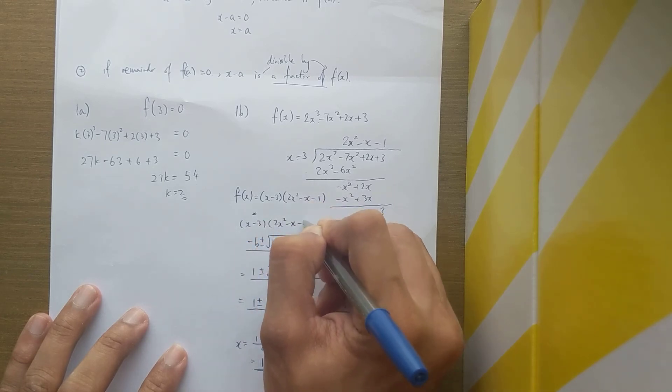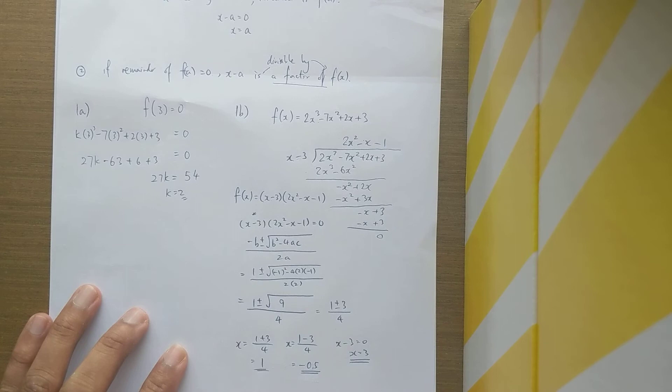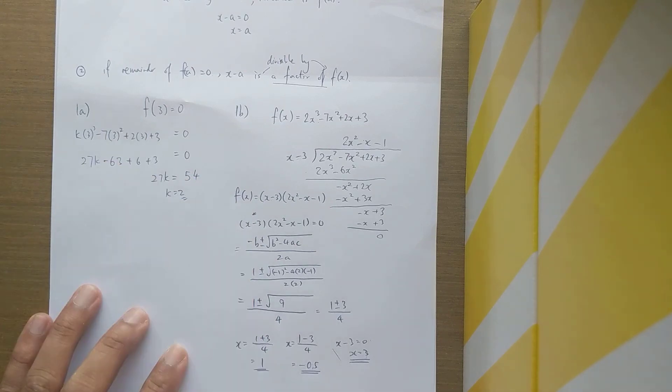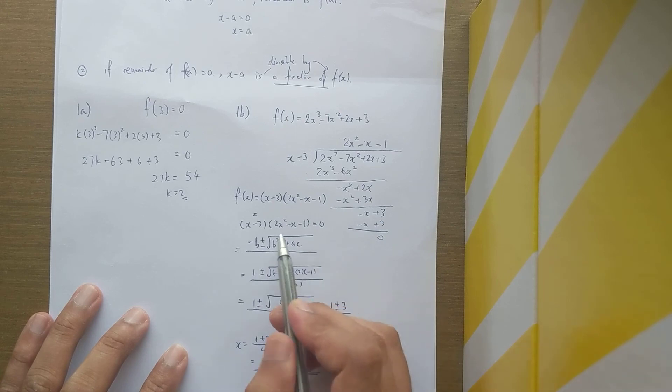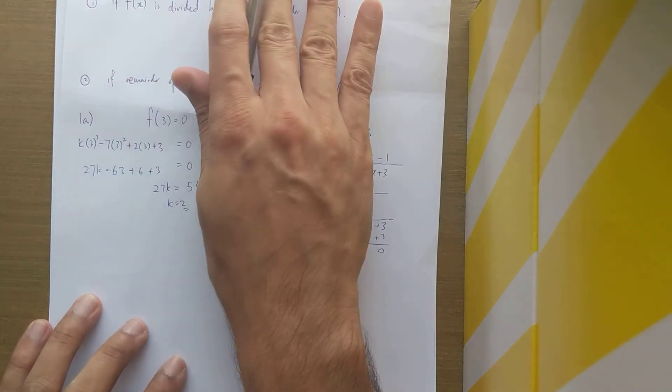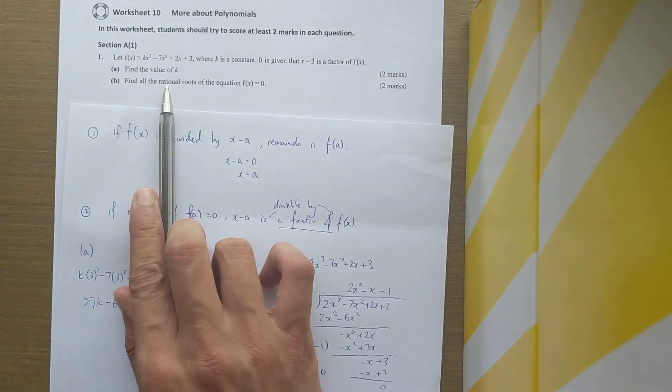You will write them down because f(x) needs to be 0. Your first answer is from here, and then the second answer—because they ask you rational roots—you immediately use the quadratic formula: negative b plus or minus square root of b squared minus 4ac over 2a.